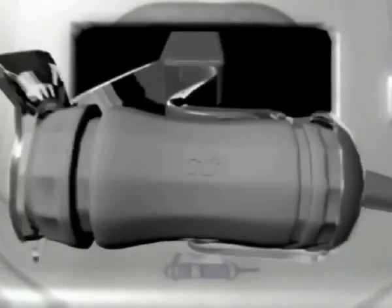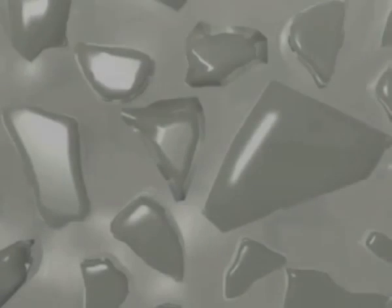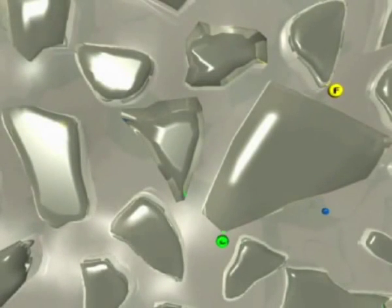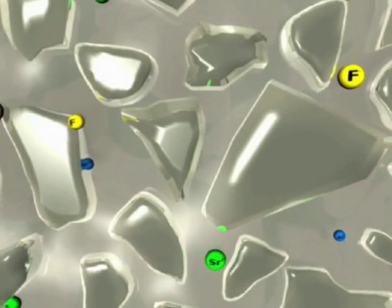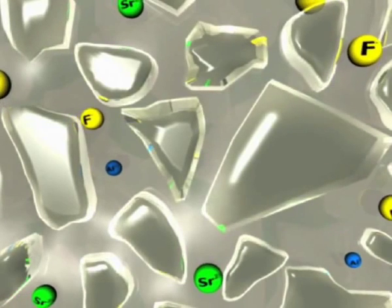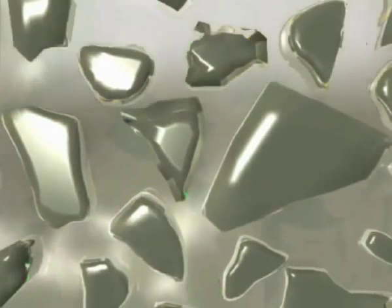During mixing, the glass ionomer liquid coats and reacts with the glass particles, releasing strontium and aluminum ions. These ions react with a polyacid to form a strong matrix which surrounds the glass particles.